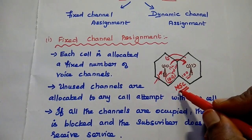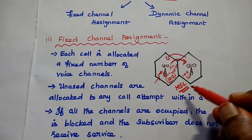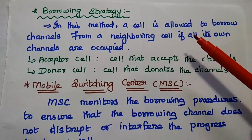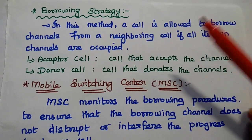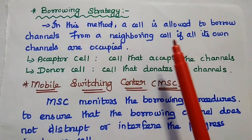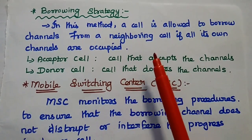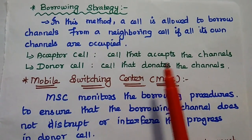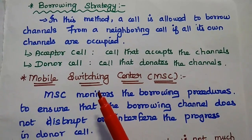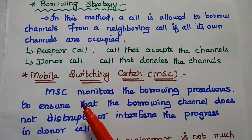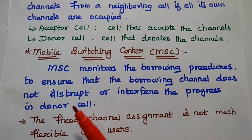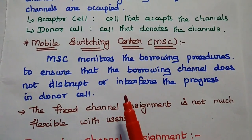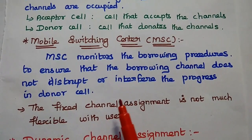MSC stands for Mobile Switching Center. This mobile switching center monitors the borrowing procedure. In this method, a cell is allowed to borrow channels from a neighboring cell if all its own channels are occupied. The cell that accepts the channels from the neighboring cell is known as the acceptor cell, and the cell that donates the channels is known as the donor cell. The MSC is used to monitor the borrowing procedure mainly to ensure that the borrowed channel does not interrupt or interfere with the progress in the donor cell.